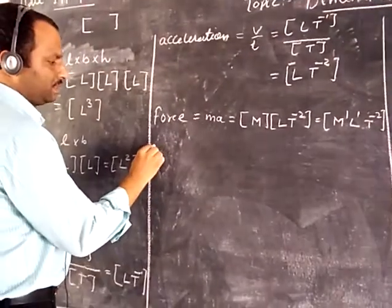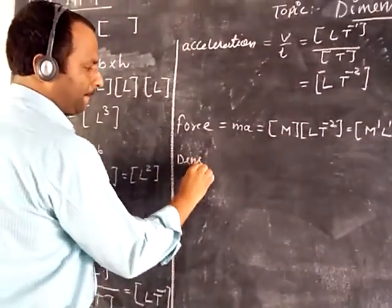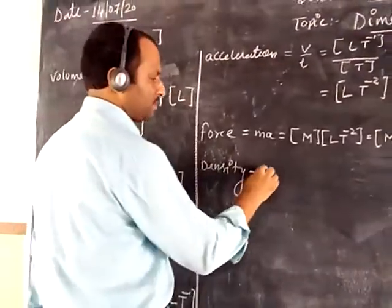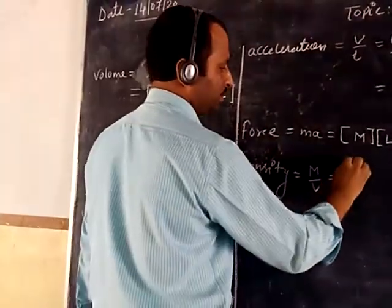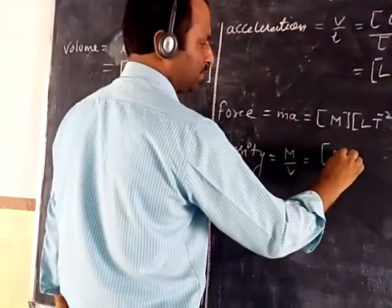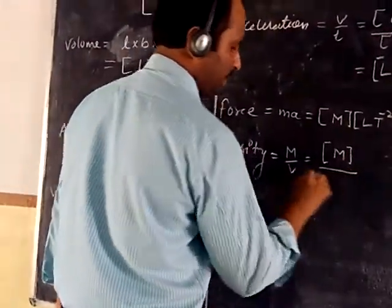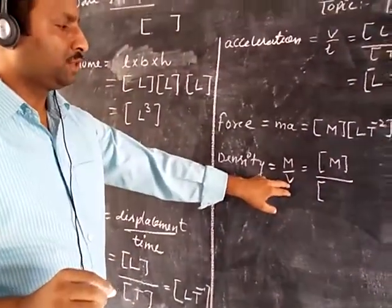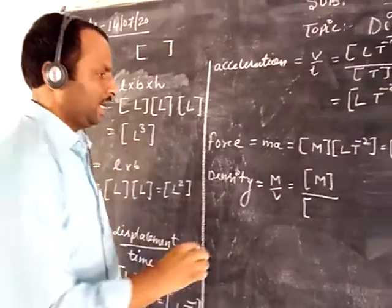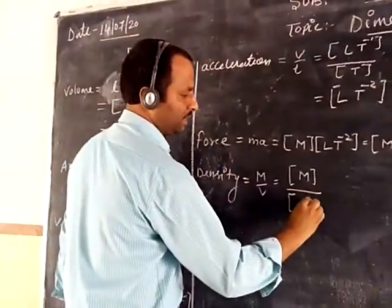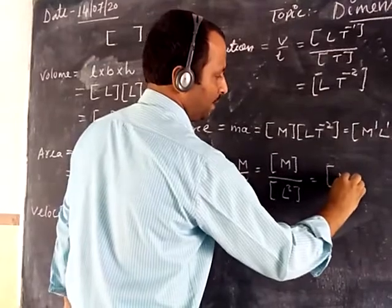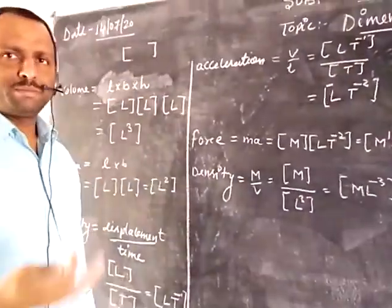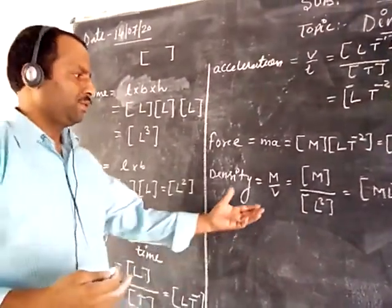Next is density. Density is defined as mass per unit volume. The dimension for mass is M, and the dimension for volume we have calculated is L³. So the dimension of density is M L to the power minus 3. In this way, dimensions can be found if we know the formula.